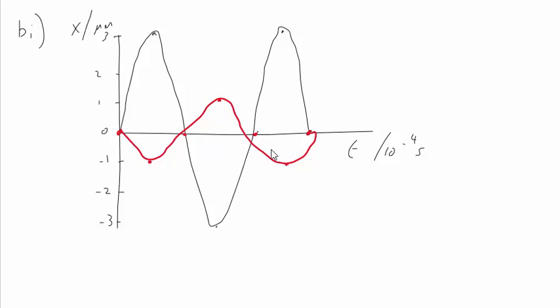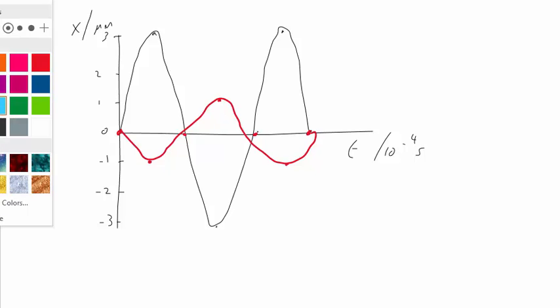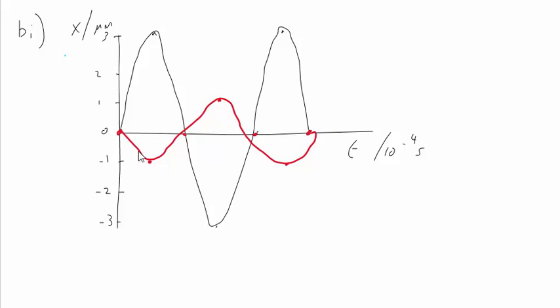In preparation for part 2, I'm going to run through what the sum of these would be. So basically, they would superpose. Here, we've got zero from the black wave and from the red wave, which is zero.